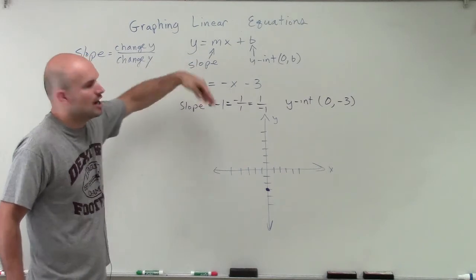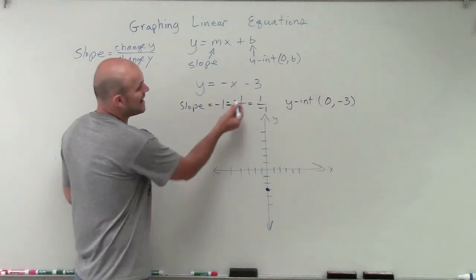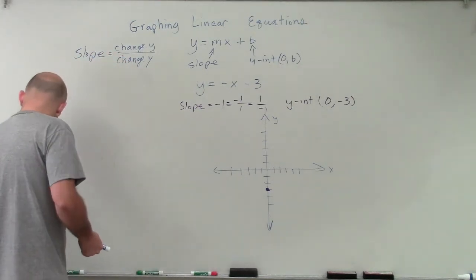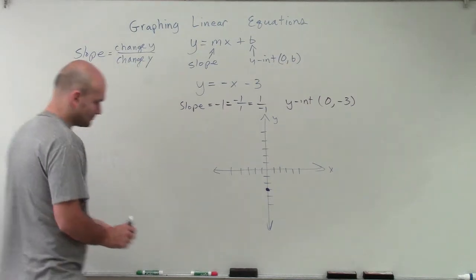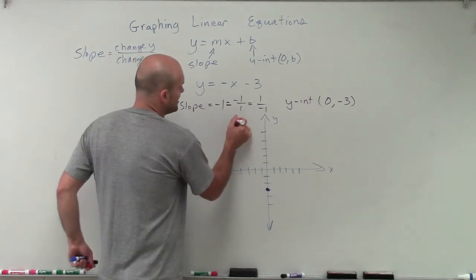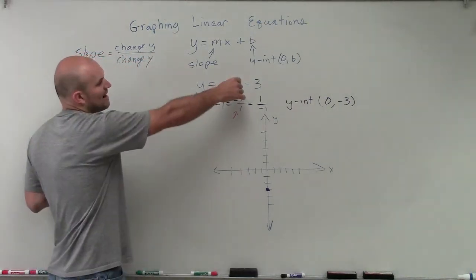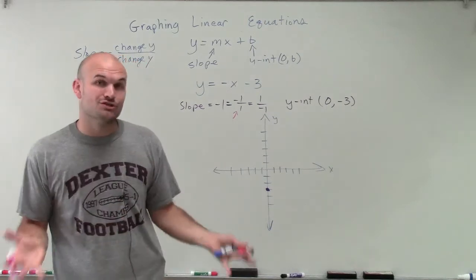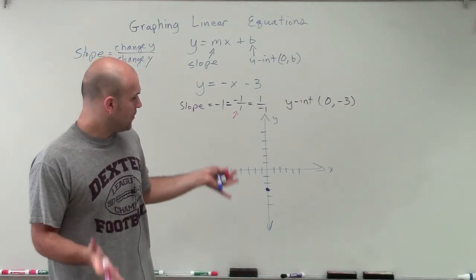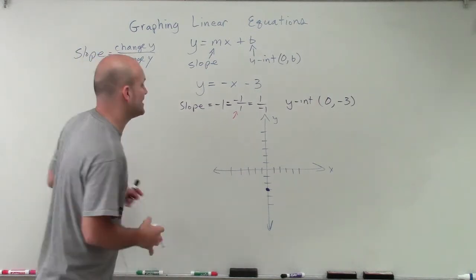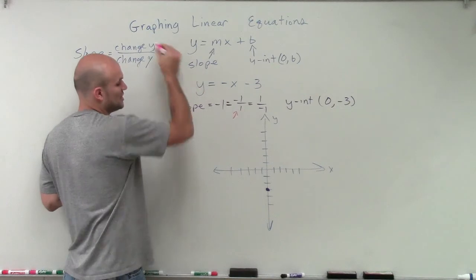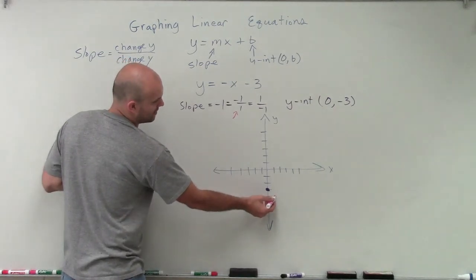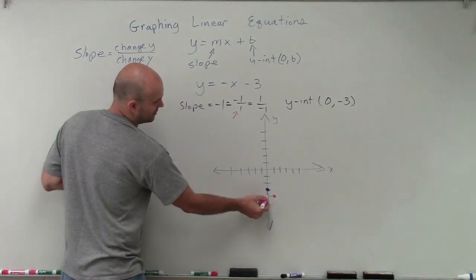Now I need to use the slope triangle to help me find my next coordinate point. It doesn't matter which one you use — negative 1 over 1 or 1 over negative 1. Let's use pink for the first one. If I use negative 1 over 1, that means the change in my y-coordinates to get to the next point: I'm going to go down negative 1, and the change in x is positive 1, so I'm going to go to the right 1. My slope triangle looks something like that.